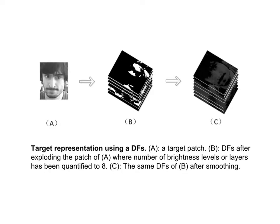In the tracking by detection method, target representation is one of the most important aspects. Many features have been used to represent a target. Recently, Haar-like features are widely used to represent a target in tracking by detection, because of their fast computing by integral image and strong ability to represent the spatial structure of the target.